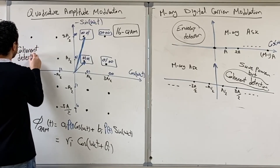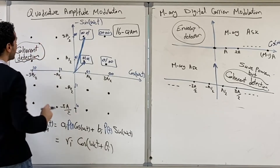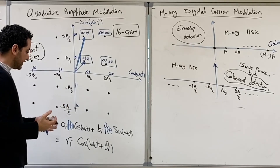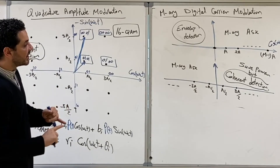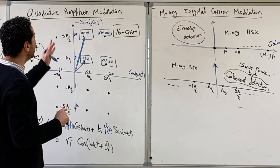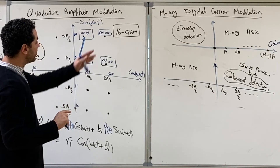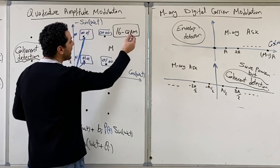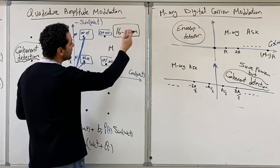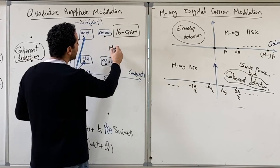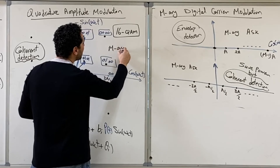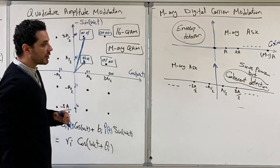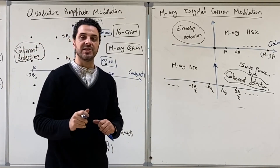This is something we know since we studied QAM in the analogue case. So that was the last modulation technique — we talked about ASK, PSK, and finally M-ary QAM, with 16-QAM as an example. We typically write it as M-QAM or directly as 16-QAM. That's it for this video; see you in the next one.